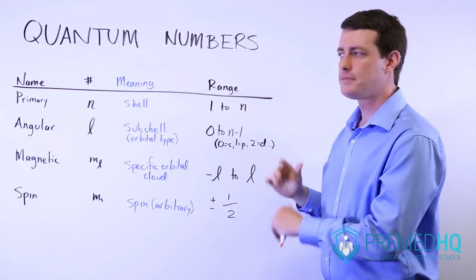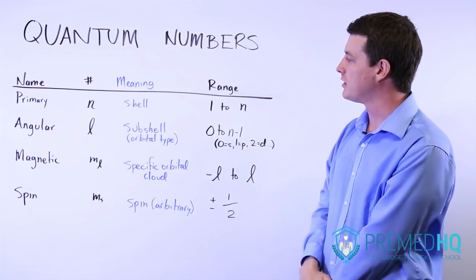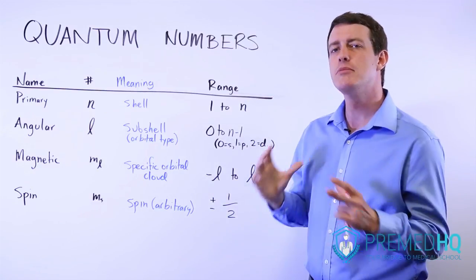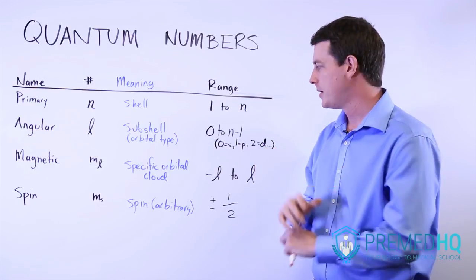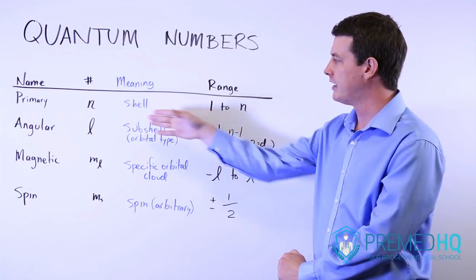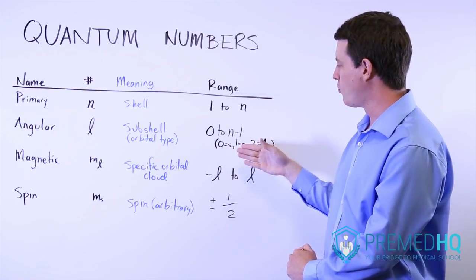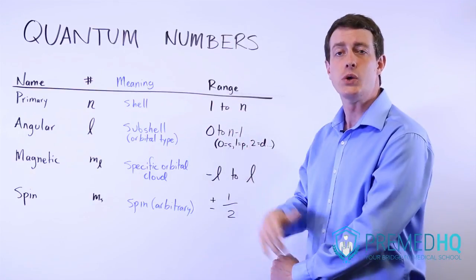The second quantum number is the angular quantum number, and that tells you about what subshell it's in or what orbital type. And so the s orbital is assigned an l number of 0, p has an l of 1, d has an l number of 2.